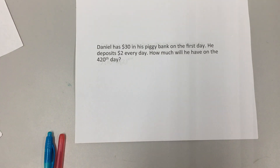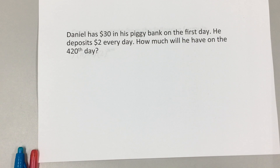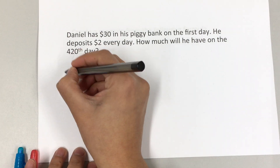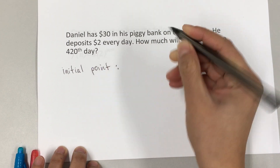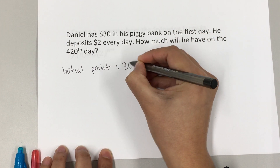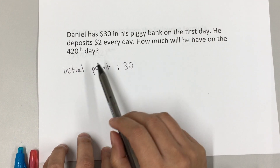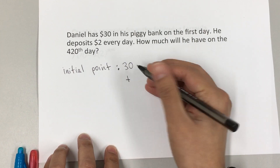This one says: Daniel has 30 dollars in his piggy bank on the first day; he deposits two dollars every day. How much will he have on the 420th day? So again we need the initial point, which is what he starts with — 30 dollars. And the pattern is not a common ratio; we're adding, so the pattern is to add two dollars.